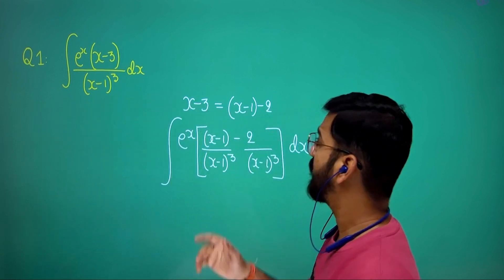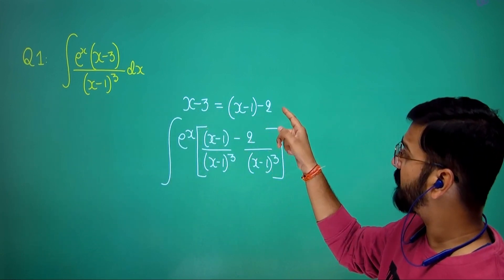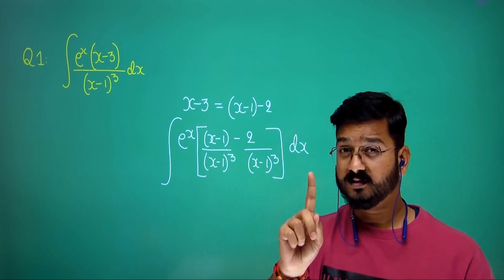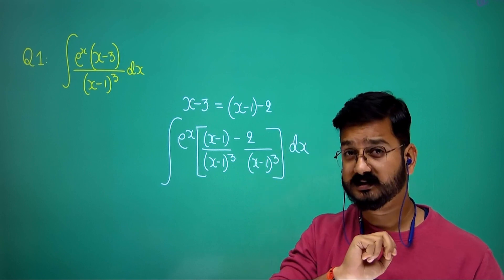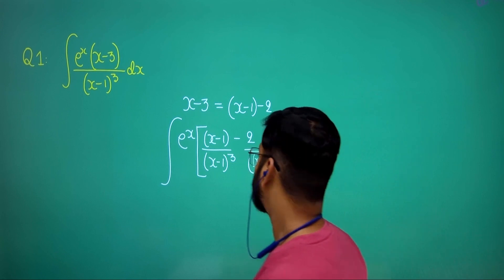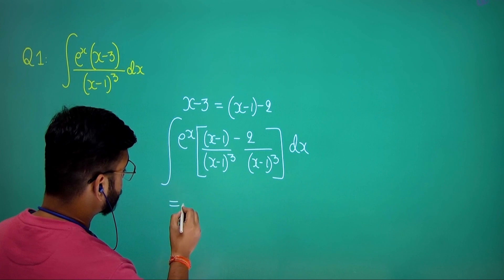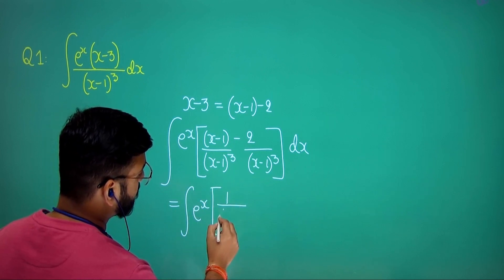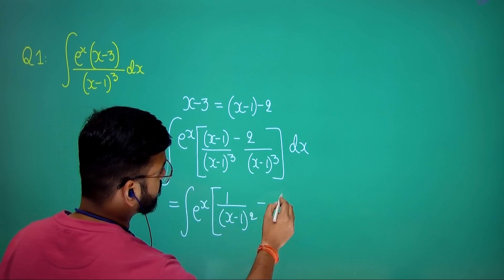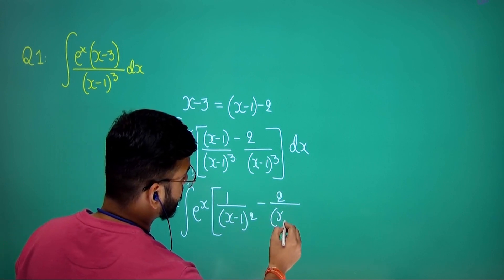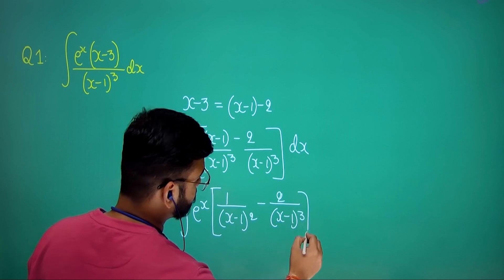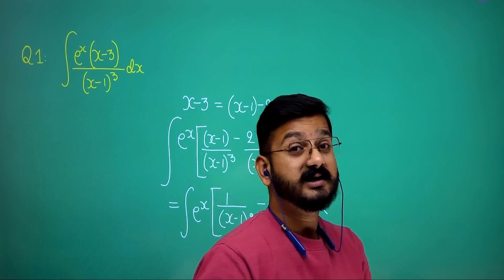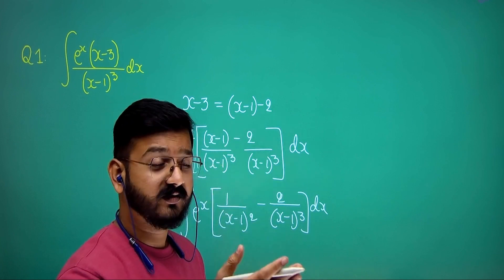Out of these two functions, one will be the original function and the other will be its differentiation — we need to identify them. Simplifying, it becomes the integral of e to the power x times [1/(x minus 1) squared minus 2/(x minus 1) cubed]. The key is identifying which is f(x) and which is f'(x).